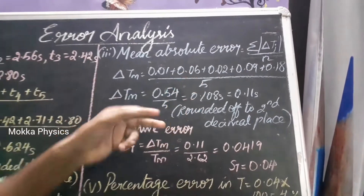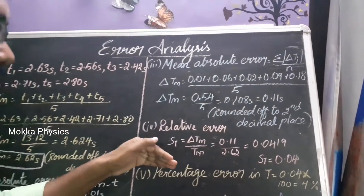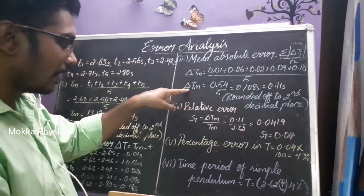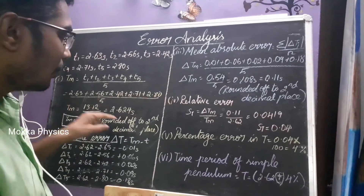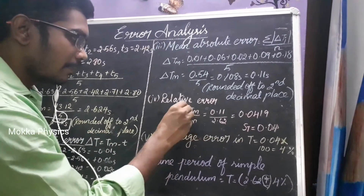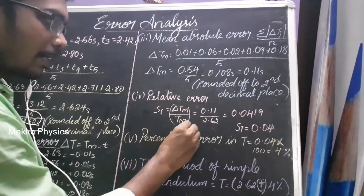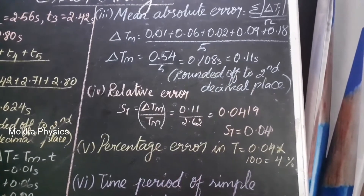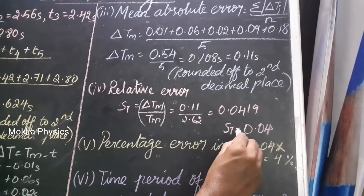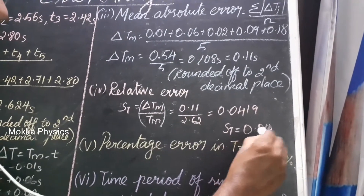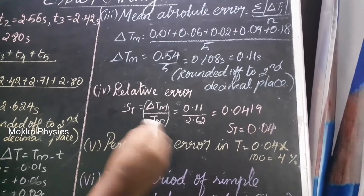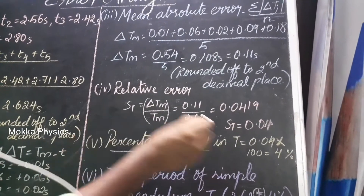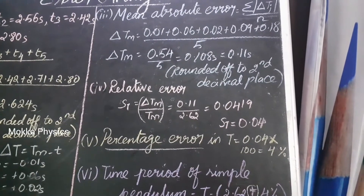Now let's look at relative error. If you want to convert, take the mean absolute error divided by the true value to get the ratio. The result is 0.0419, which we round to 0.04. If you want to express it as a percentage, that relative error becomes the percentage error.